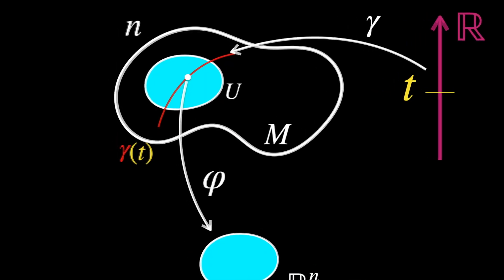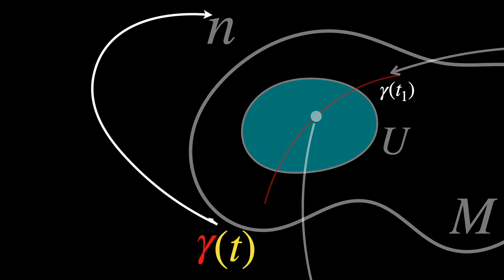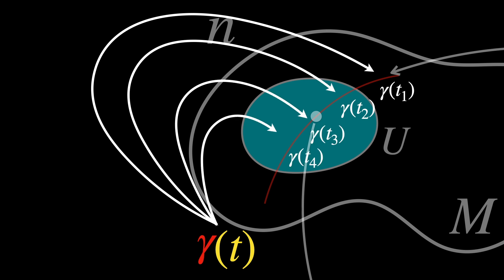Gamma is a function or a map that takes in a parameter T and returns a position, a point, on the manifold M. As we established previously, for each value of T, Gamma T gives a point on the manifold. If T is thought of as time, then Gamma T would describe the position of a particle or moving object on the manifold at time T. The arrow shows that the function is mapping values of T to corresponding points on the manifold.